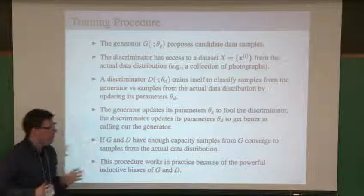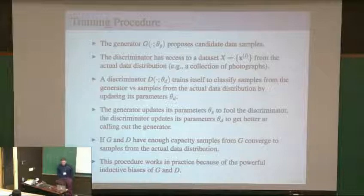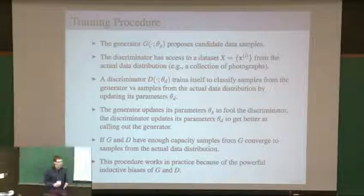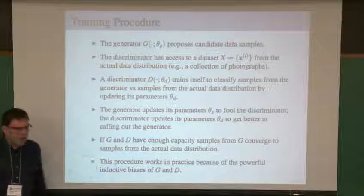The generator will update its parameters theta_G to fool the discriminator. The discriminator will update its parameters theta_D to get better at calling out samples from the generator. We can show that if G and D have sufficient capacity, samples from G will converge to samples from the actual data distribution. In practice, what really makes this approach work well are the inductive biases of these models.